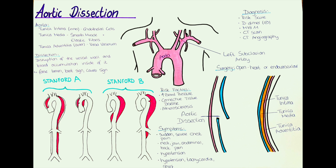In other cases patients experience pain in the back and in the abdomen, which indicates that the descending aorta is affected. Most patients will also have hypertension. In some cases however, the aortic trunk is affected, which can lead to hypotension. A quite reliable indicator is that in many patients there will be a difference between the blood pressure of the right and the left arm — a difference of over 20 mmHg indicates an aortic dissection.